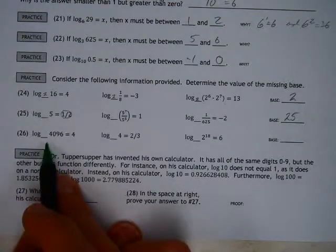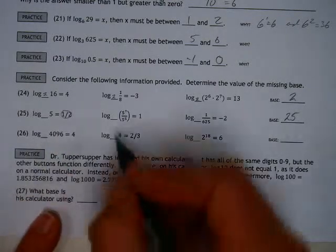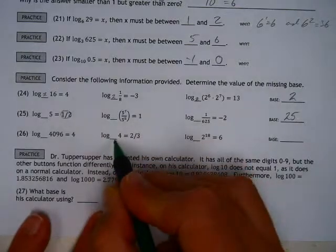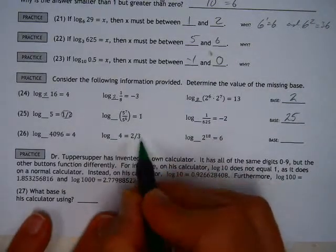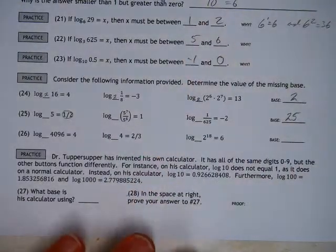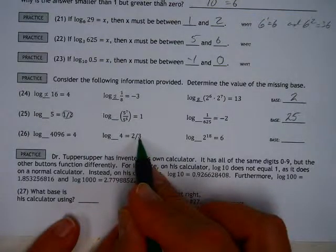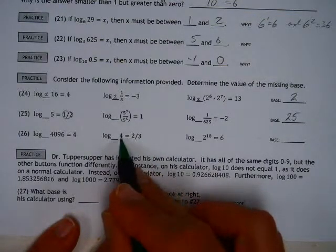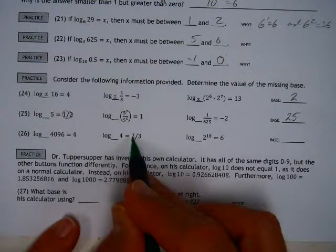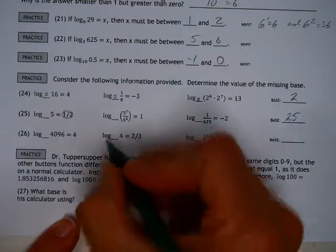I don't know that I want to deal with this. But this one, something that you're raising to the 2 3rds power, which means you're, first of all, taking the cubed root of it, and then you're squaring it to get a 4. Well, squaring what will give me a 4? A 2. And the cubed root of what will give me a 2? Well, that's an 8.